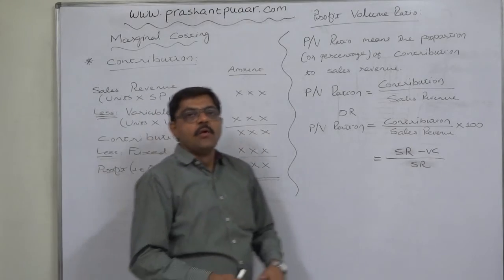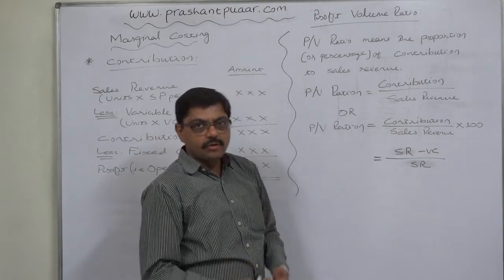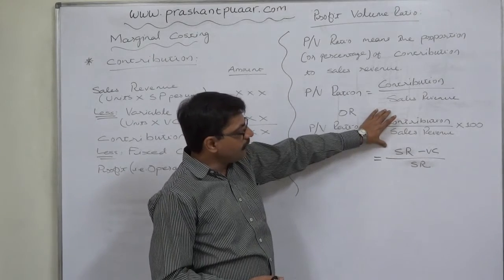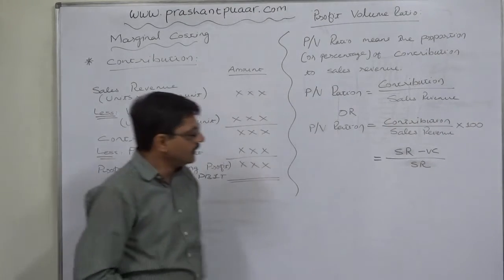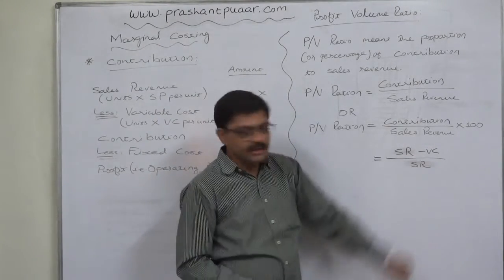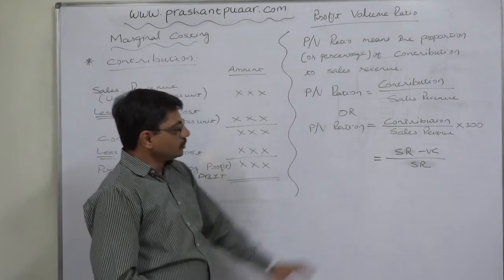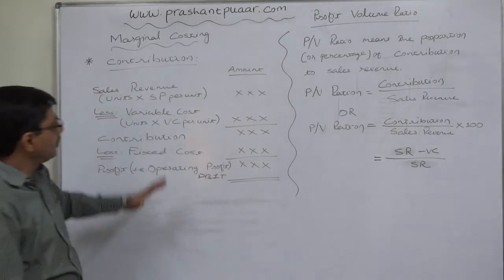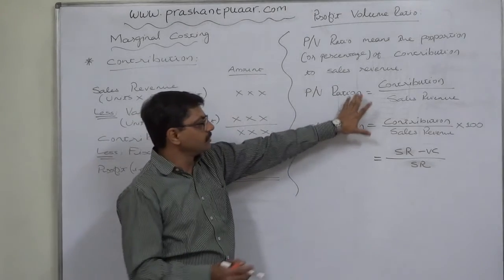If the sales is 100 rupees or 100 dollars or 100 euros, then what is the amount out of 100 that is contribution. We know that contribution is excess of sales revenue over variable cost. All the factors which influence the contribution margin also influence the PV ratio.